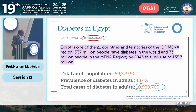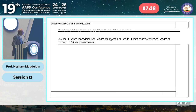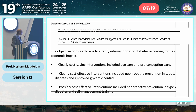Egypt is one of the MENA region countries with a significant number of diabetes cases. The literature on economic analysis of interventions for diabetes — as noted in Diabetes Care 2000 — says that management could be clearly cost-saving, clearly cost-effective, or possibly cost-effective.